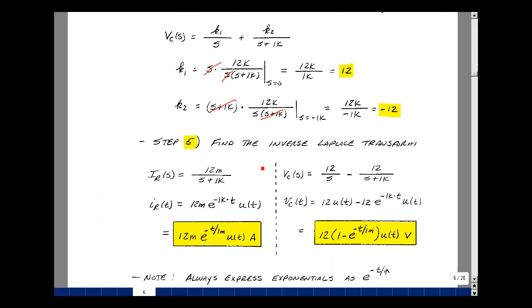Step 5 in the algorithm will be to find the Inverse Laplace Transform. For our current, we had 12 milli over S plus 1k, so that's just simply 12 milli times e to the minus 1k times t, times u of t. As we showed in ECE 201, I usually write this as minus t divided by 1 over 1k, which would be 1 milli.